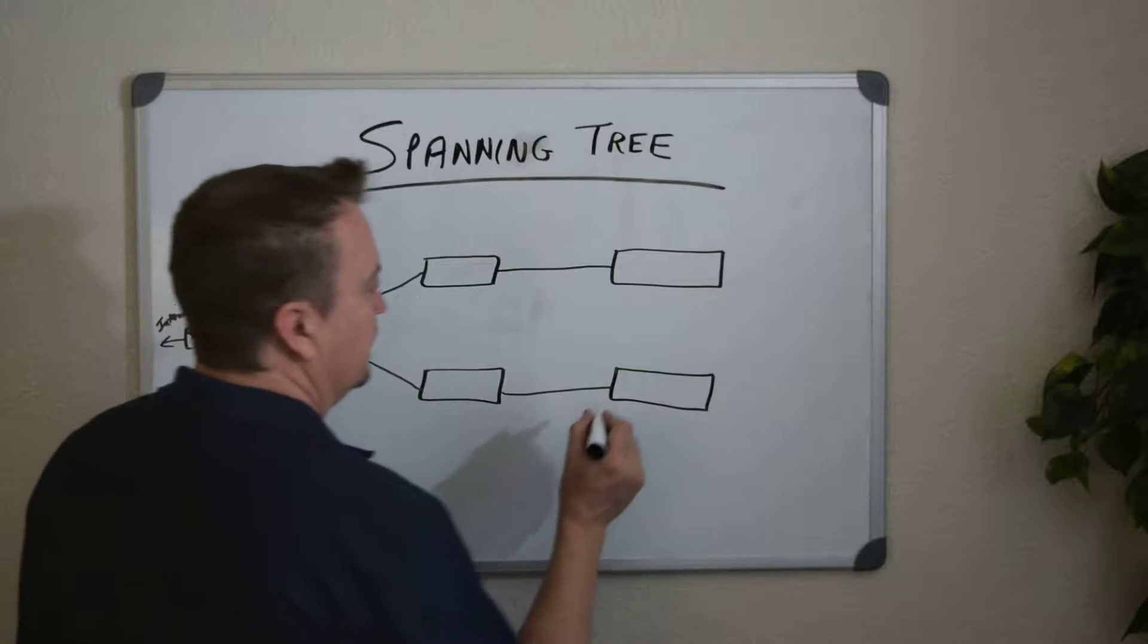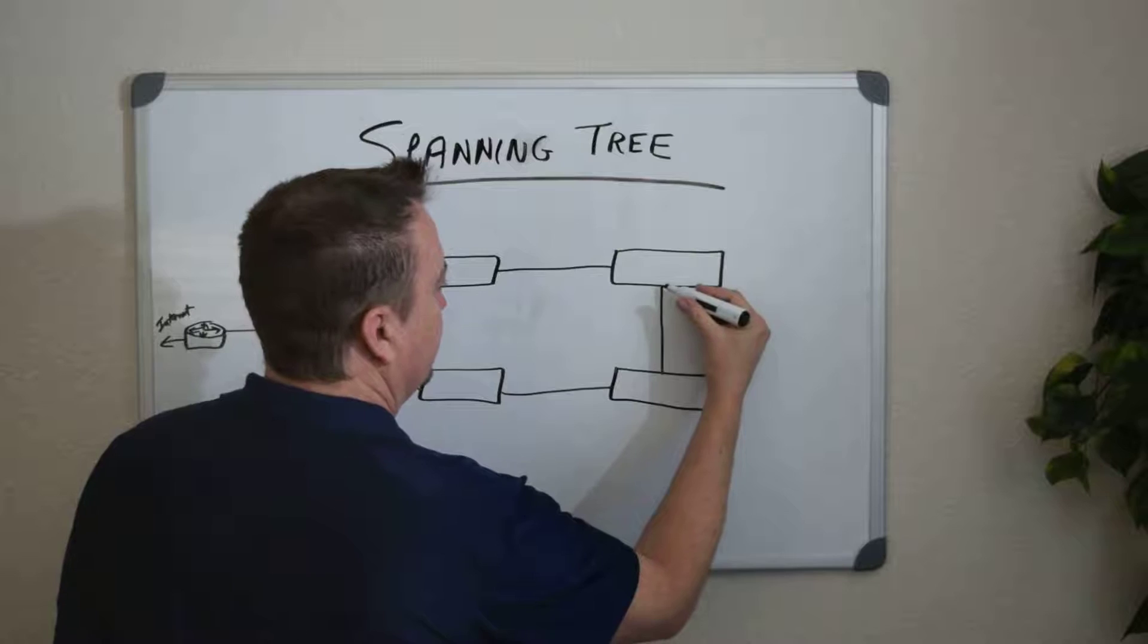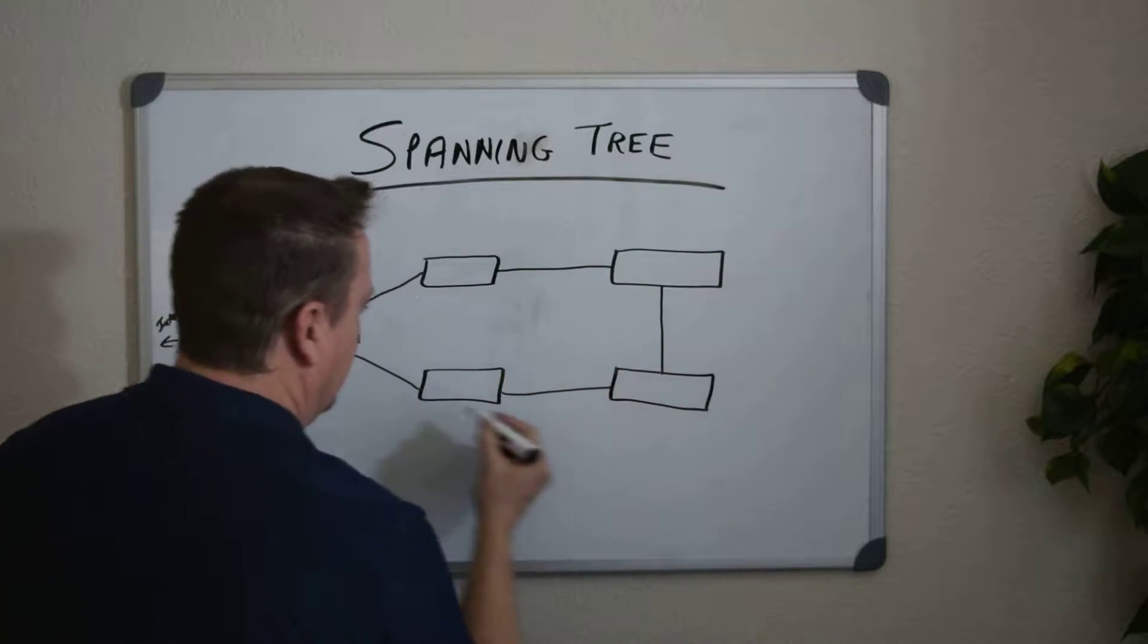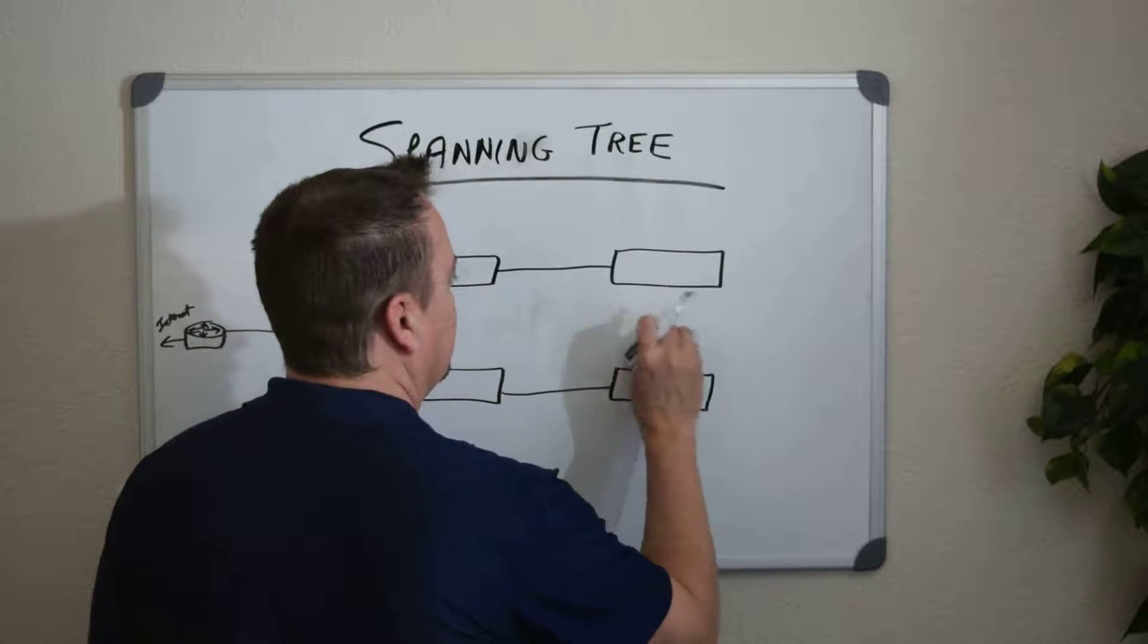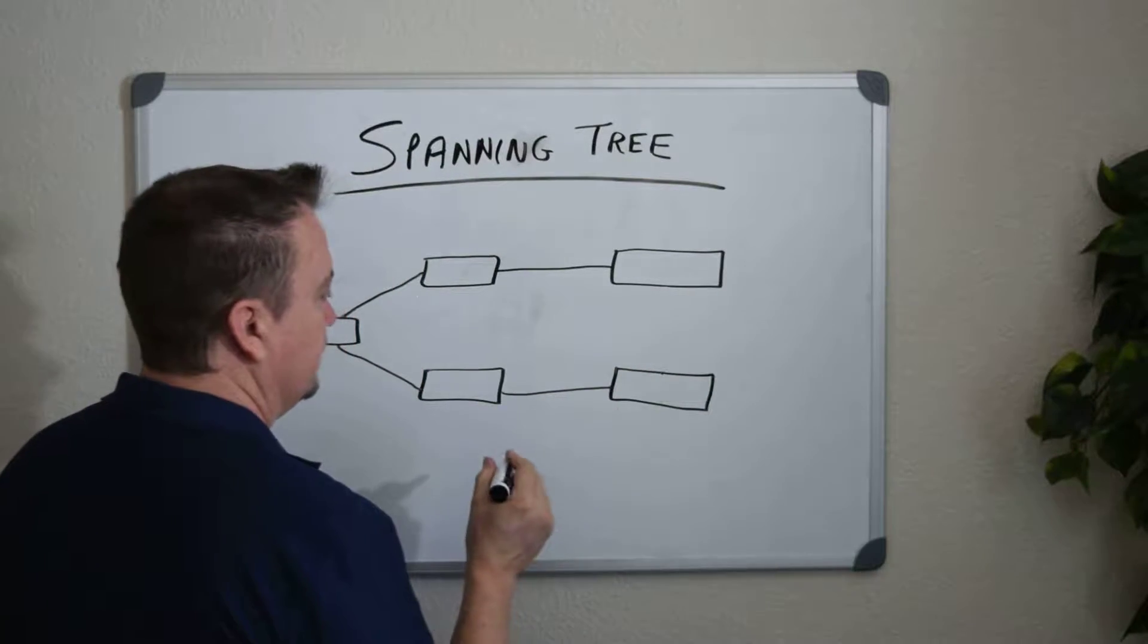Now, a physical loop can be a big loop connection. Let's say we inadvertently run a cable from this switch to this switch, and we create a loop here on these five switches. That's really bad, and I'm going to get into the details as to why loops are bad in just a second, and why Spanning Tree is needed.